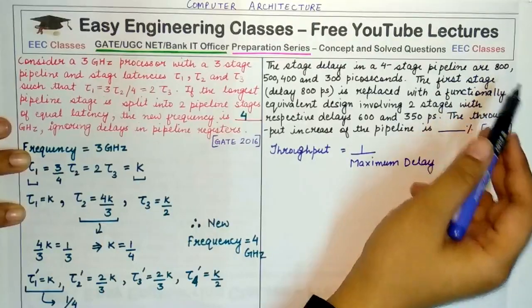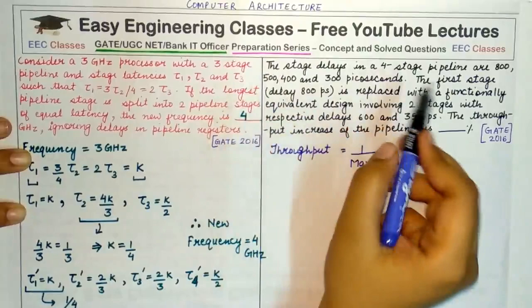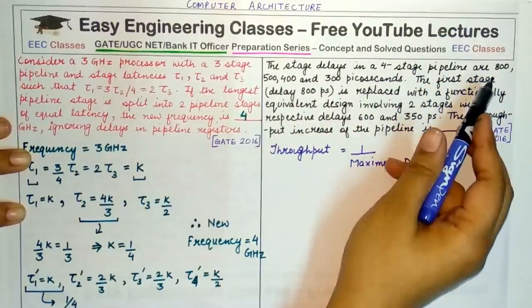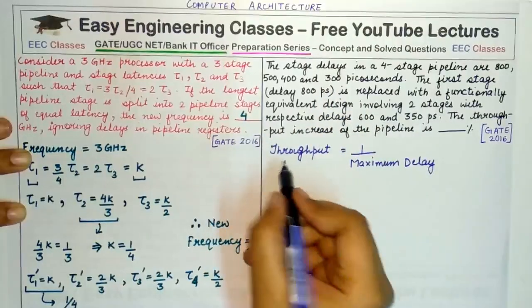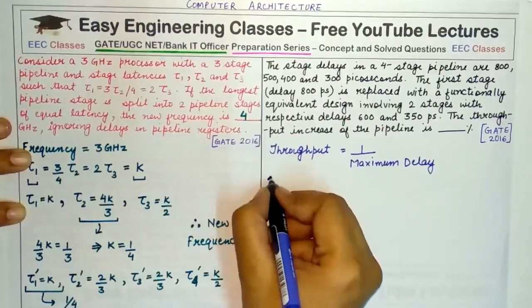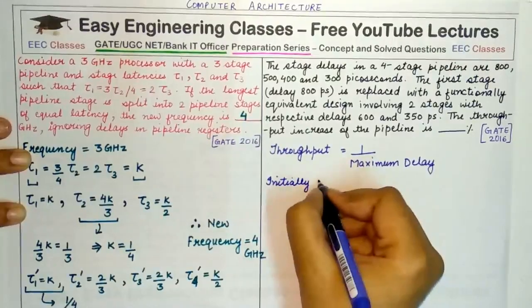So what would be the throughput in the initial four-stage pipeline where delays are 800, 500, 400, and 300? Initially, our throughput is 1 upon 800.